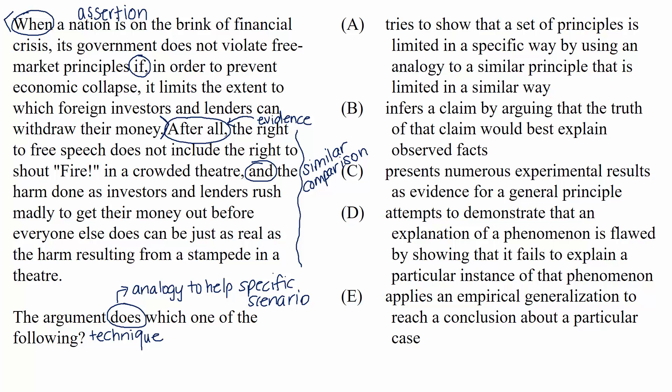Choice A states that the argument tries to show that a set of principles is limited in a specific way by using an analogy to a similar principle that is limited in a similar way. That's a match for what we predicted. We said the arguer is making an analogy to make a case for a specific exceptional scenario. On test day, if you feel confident in your prediction, then you can happily select this answer and move to a different question.